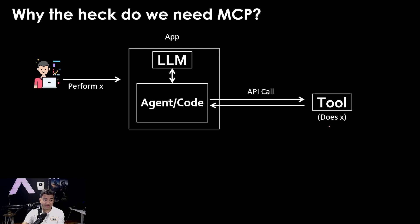For example, if you ask what's the weather in New York City, the agent will call a weather tool, and this weather tool will give back the information to the agent. The agent will send the information back to the large language model, which will format it nicely and send it to you.